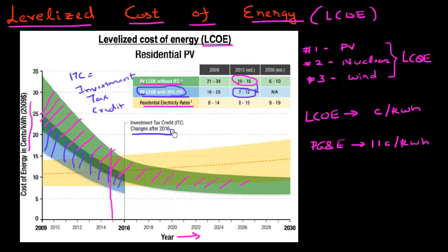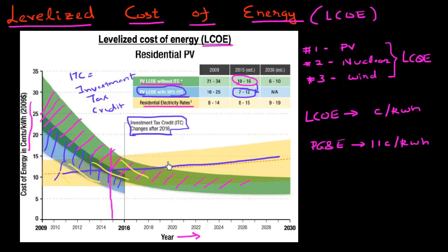The investment tax credit was set to expire around 2016, with uncertainty about extension. The idea is that using this ITC, you reduce the LCOE such that it becomes equal to or less than what you conventionally pay for electricity. The yellow envelope here plots the conventional residential electricity rate — currently around 11 cents per kilowatt hour in the Bay Area — which rises marginally at about 2 to 3 percent per year.